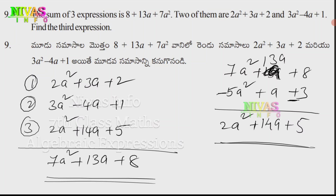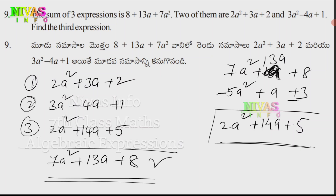The answer is 2a² plus 14a plus 5. Let's verify by addition: 2 plus 3 plus 5 is 7 — so 7a². Plus 3a plus 14a is 17a, then minus 4a gives 13a. Next 2 plus 1 is 3, plus 5 is 8. So this confirms the answer: 2a² plus 14a plus 5.